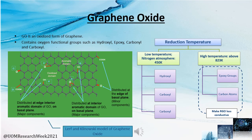We then conducted a literature survey for the reduction temperature range. At lower temperatures, such as 450 Kelvin, hydroxyls, carboxyls, and carbonyls tend to reduce. At higher temperatures, normally above 823 Kelvin, epoxyls and carbon atoms tend to be removed. This reduction of carbon atoms makes the graphene oxide less conductive. Therefore, we selected our reduction temperature range as 450 Kelvin to 823 Kelvin.